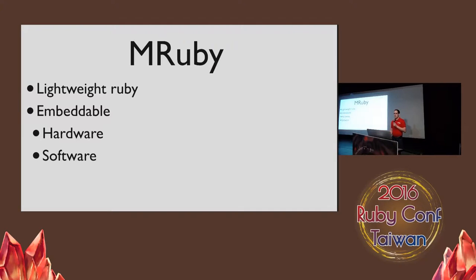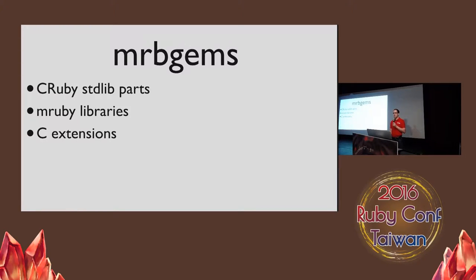mruby is a lightweight Ruby implementation. You only need to use as much of the features as you need, which keeps it smaller. It's also designed for embedding — you can run it on low resource hardware or embedded in other software without the same hassles from trying to embed CRuby. Like CRuby, mruby has libraries and calls them gems. mruby ships with a limited standard library, so you need to use a gem to get an array with all the same features you get from CRuby. There are also standalone mruby libraries, some of which are C extensions that wrap C libraries like the mruby-curl gem.